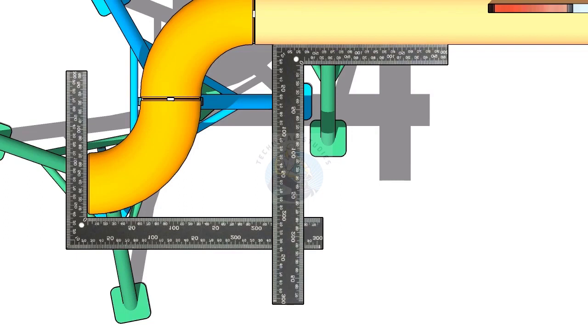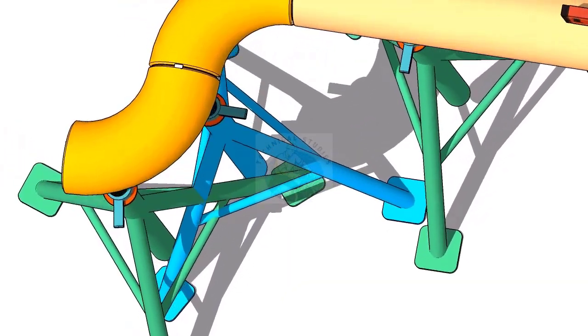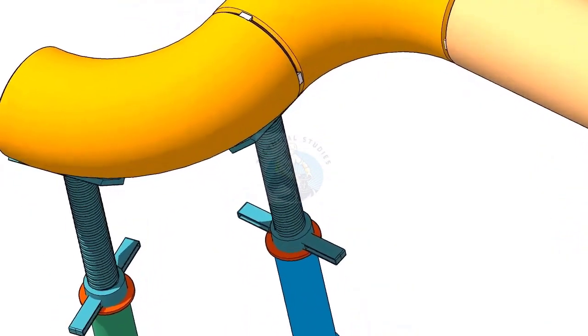Hold two right angles, one on the face of the elbow and one on the pipe side. Now use another right angle and check the squareness. Tack weld on both sides of the elbow.